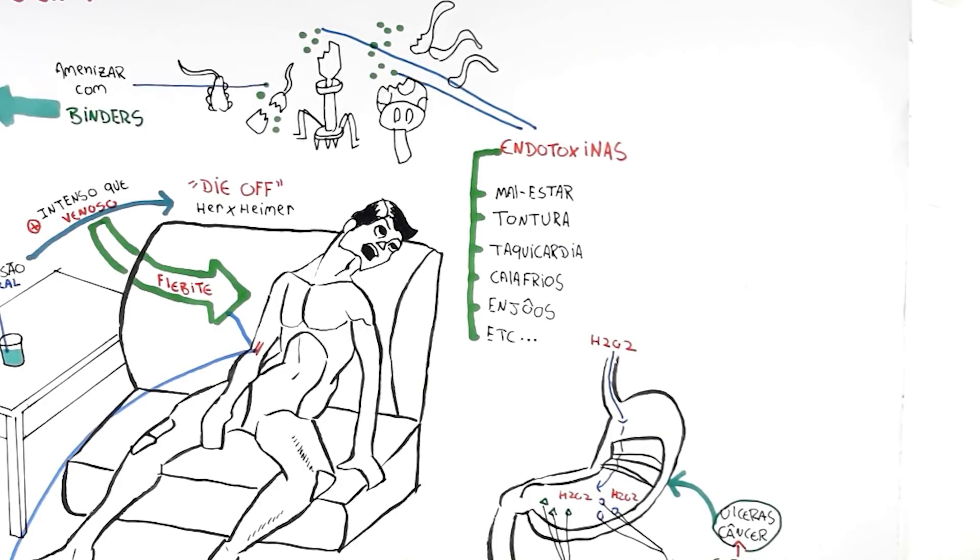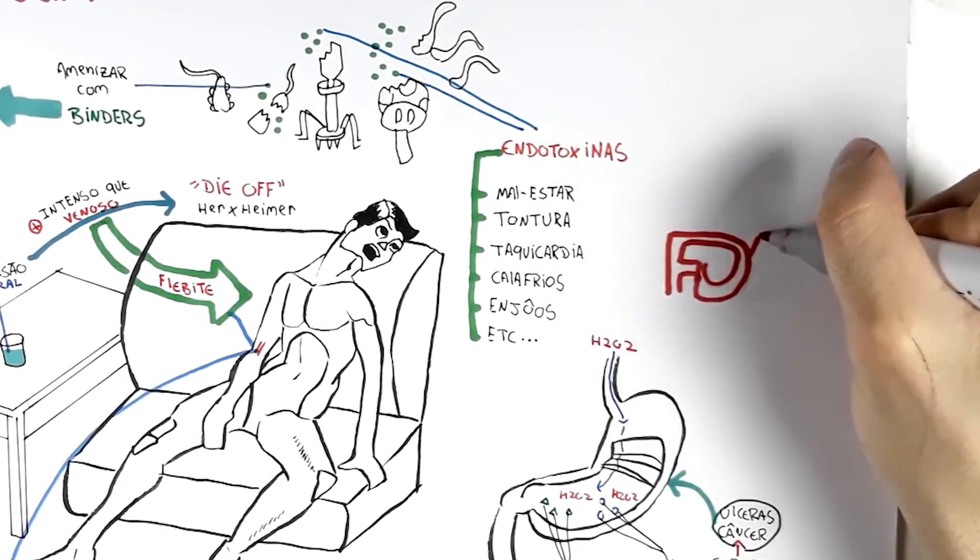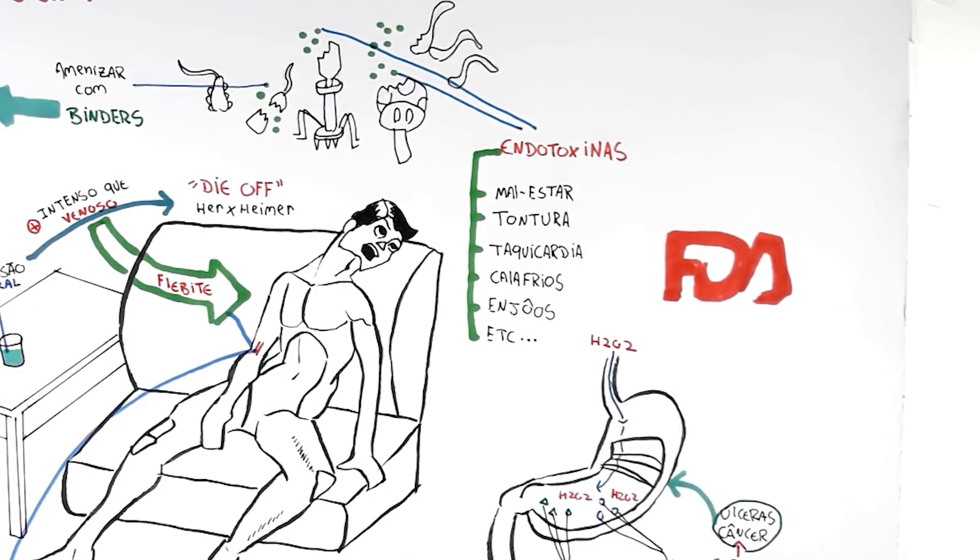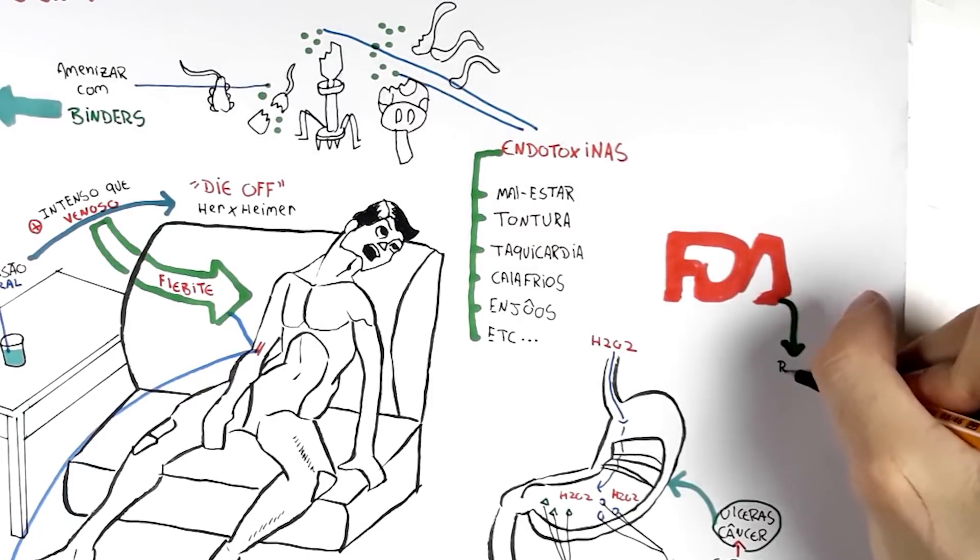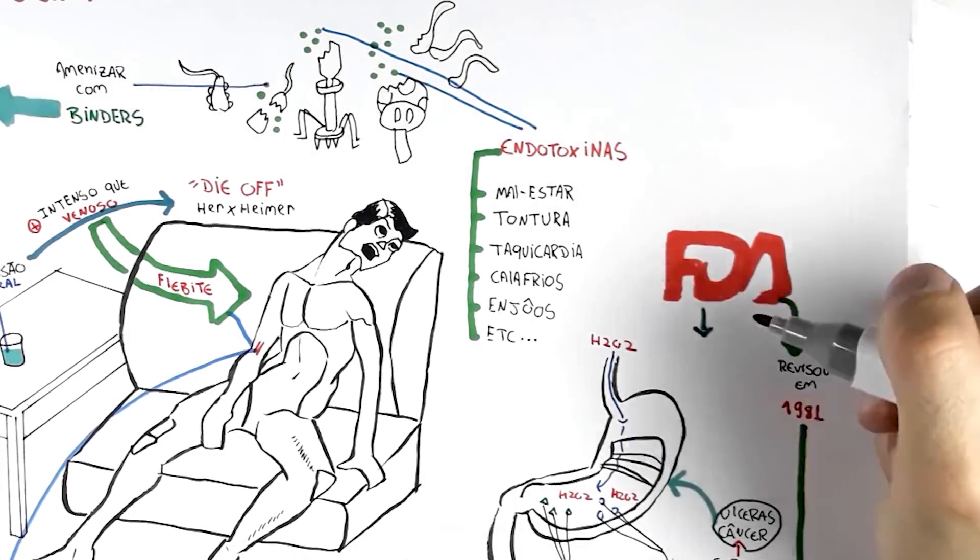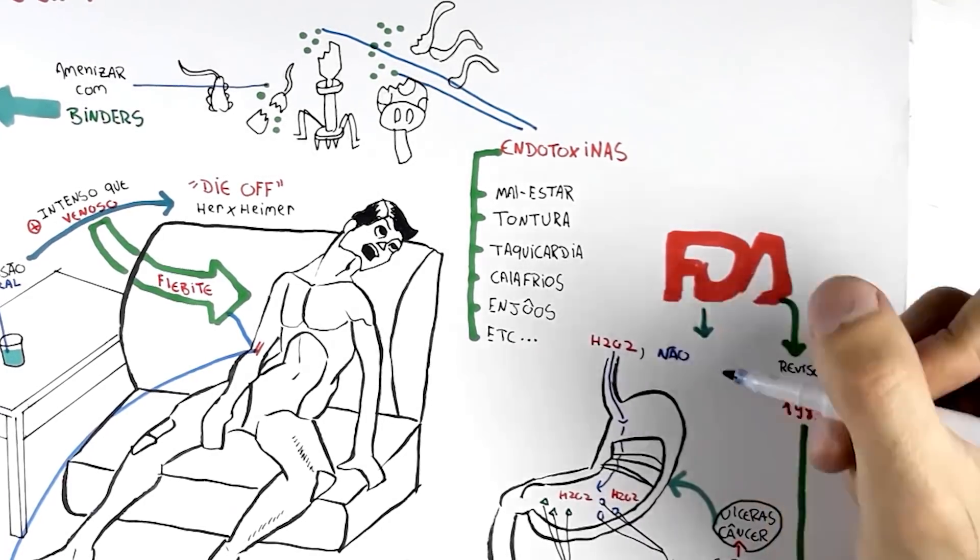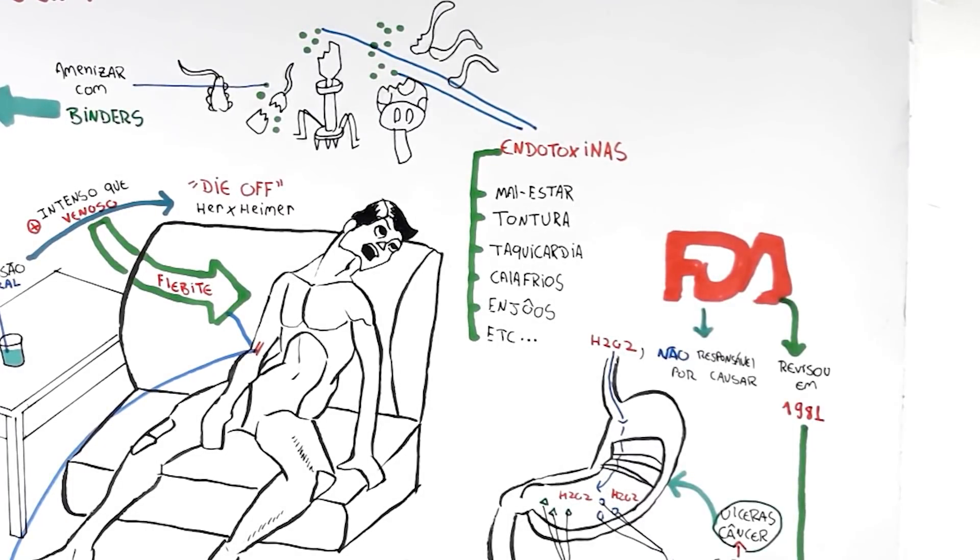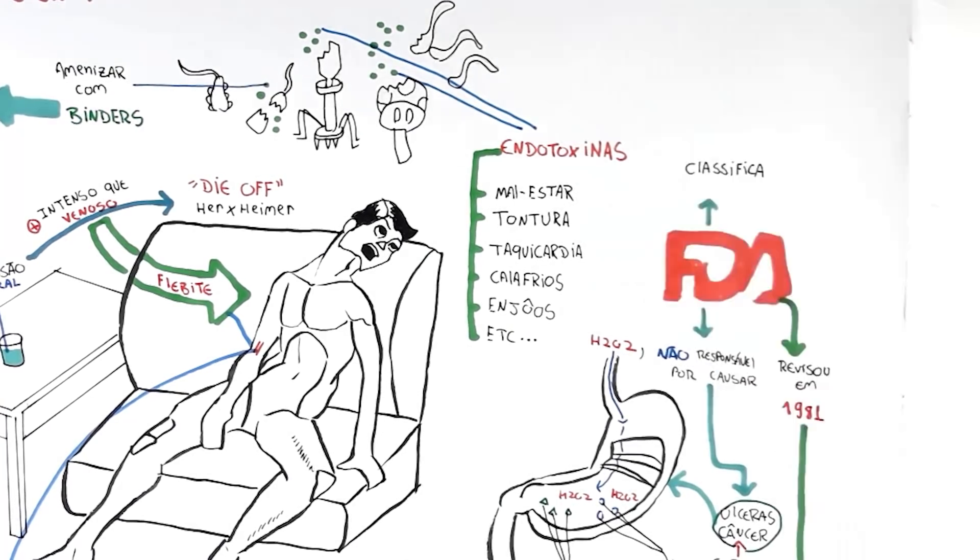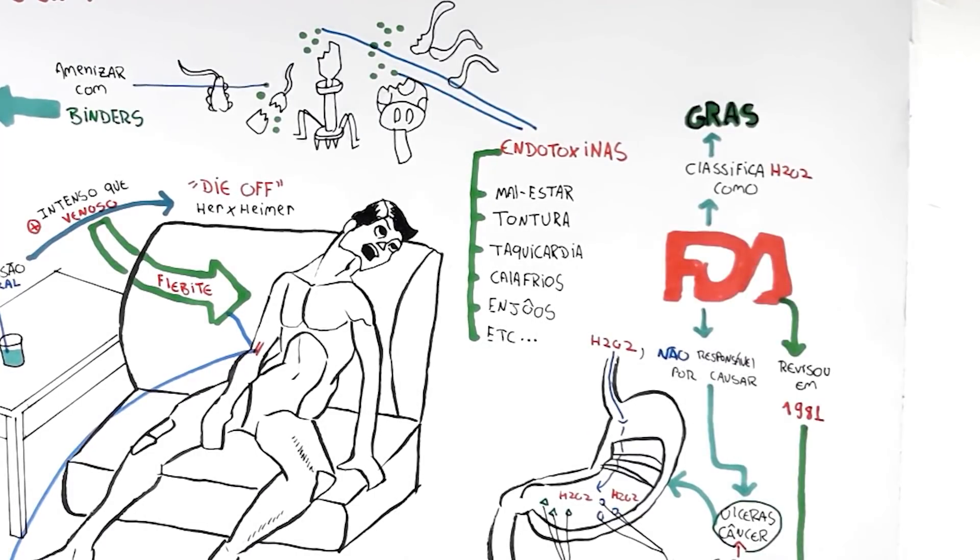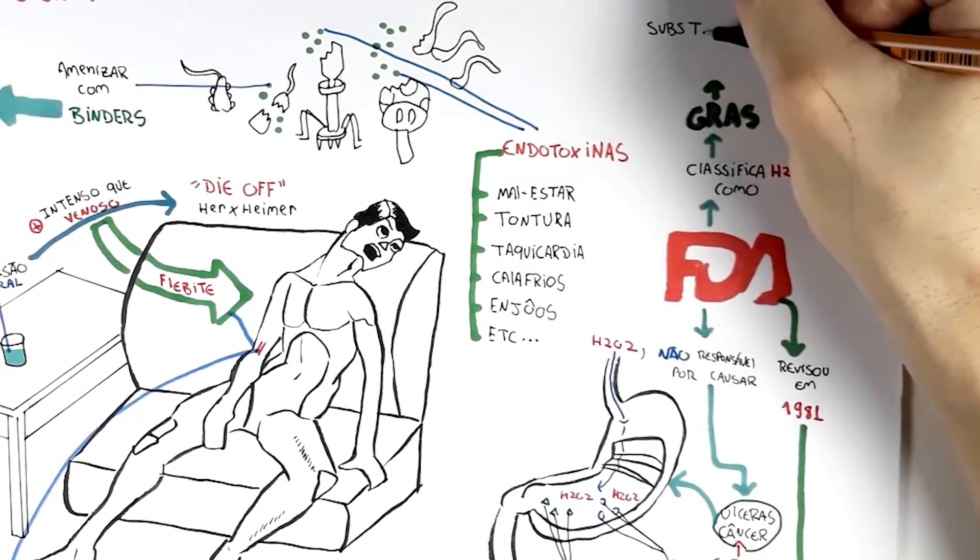An interesting thing to point out is that I don't like the FDA, the FDA institution, Food and Drug Administration. However, this time, they got it right. In 1981, they said let's review this. They reviewed the Japanese study, found these errors that were just mentioned, and said the following: they affirmed, the conclusion of this study is not correct. Hydrogen peroxide was not responsible for causing ulcerations and even cancer. Look, the FDA classifies hydrogen peroxide in the GRAS classification, which means generally recognized as safe substance.